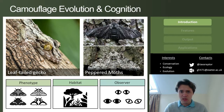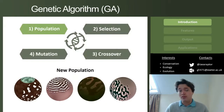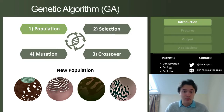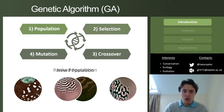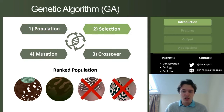A solution to this problem is to use the same process that developed the camouflage in the first place: evolution. In this case, instead of evolution by natural selection, evolution using genetic algorithms. You create a random population within the potential phenotypic space — in this case, animal patterns — put it under selection, and rank them by which ones are harder to find.